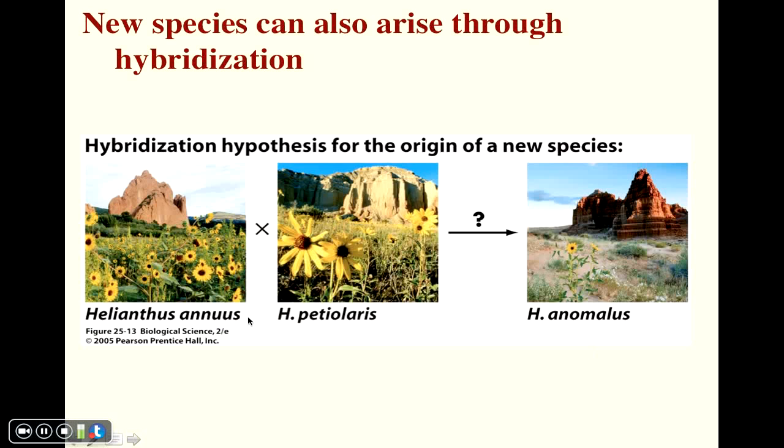And people were curious about the relationship between these three species. In fact, they hypothesized that Helianthus annuus and Helianthus petiolaris perhaps hybridized with each other to produce this third species, Helianthus anomalus. So, if that was a hypothesis, how could they actually test that hypothesis?